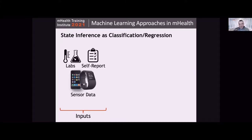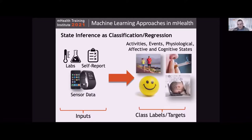We're going to focus on the state inference problem domain. For classification and regression, the fundamental thing is we need inputs and we need our labels or regression targets to formulate the problem. On the input side, there's lots of different data we could use: lab data, self-report, and sensor data. You can use any combination of these data modalities as inputs. On the output side, that depends on what aspect of state we're interested in — things like activity detection, event detection, or inferring psychological, affective, and cognitive states such as physical activity, smoking, mood, and stress.